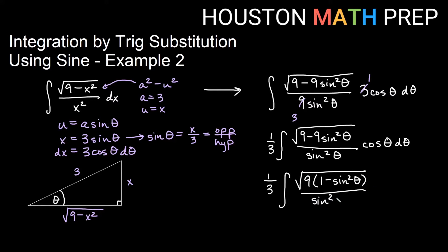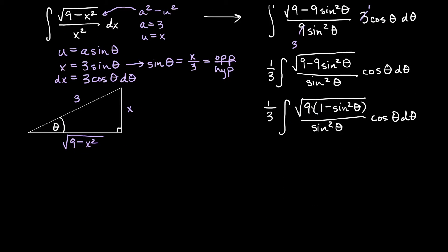Okay, while I copy down the denominator and my cosine theta d theta, so think about what's going to happen. We have a couple of things that are going to happen in the root here. One of them is that I know the square root of 9, so I can go ahead and pull that out. So if I pull out the square root of 9, that's going to be a 3 on the outside. The 3 is going to reduce the 1 third, so we actually won't have a constant out front anymore.